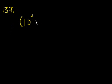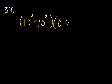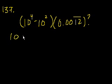Problem 137. A bar over a sequence of digits in a decimal indicates that the sequence repeats indefinitely. What is the value of 10 to the fourth minus 10 to the second times 0.0012, and then this 1, 2 will just keep repeating over and over. So let's distribute this.